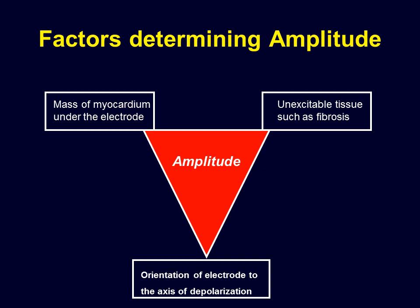If values change the very next morning, you probably have a micro-dislodgement. Many micro-dislodgements present as adequate sensing but poor capture amplitude. Bipolar recording depends on the tip-to-ring orientation relative to the activation.